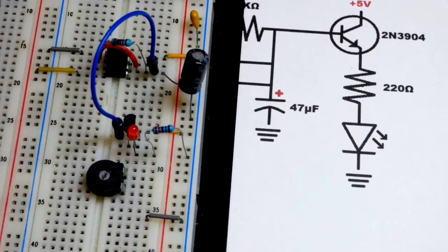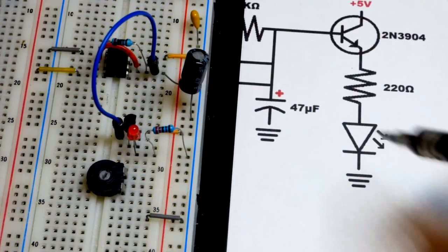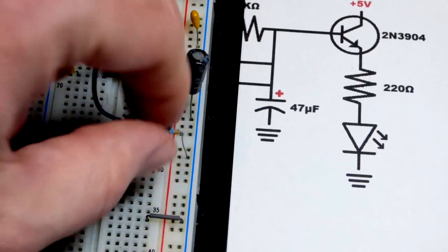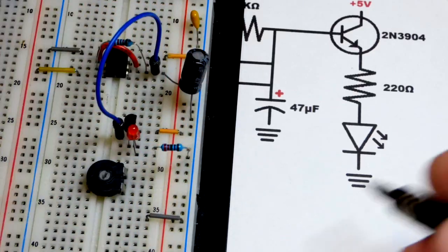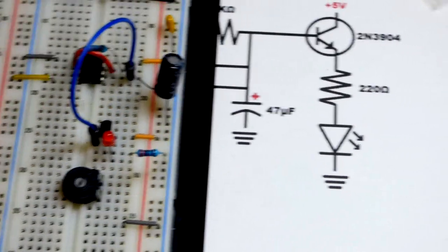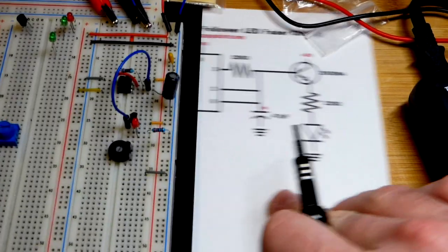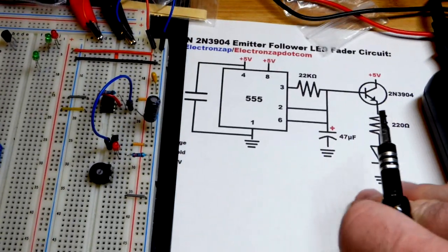They're in series, the current flows through them the same, as long as the LED is in the proper direction. So cathode being more negative and anode more positive. Let's zoom back here and we will look at the complete circuit.